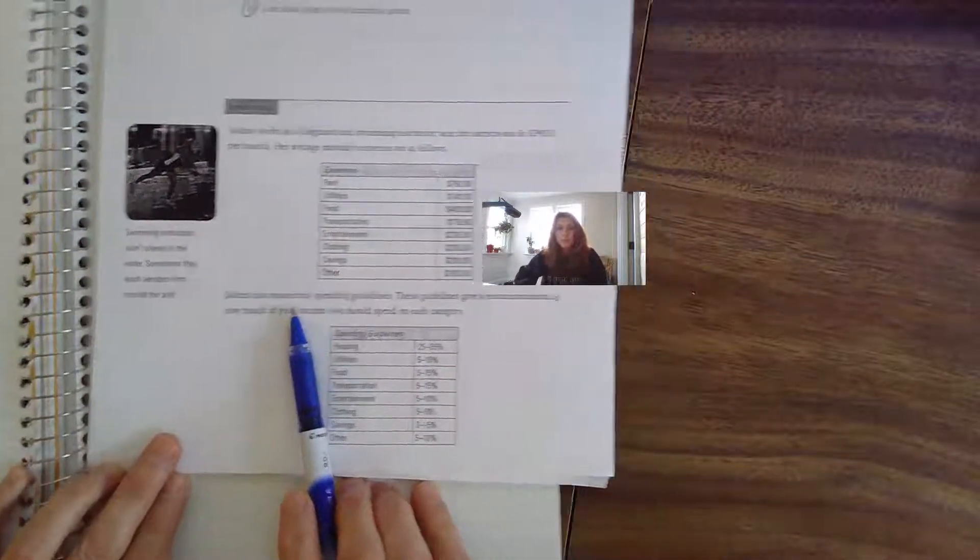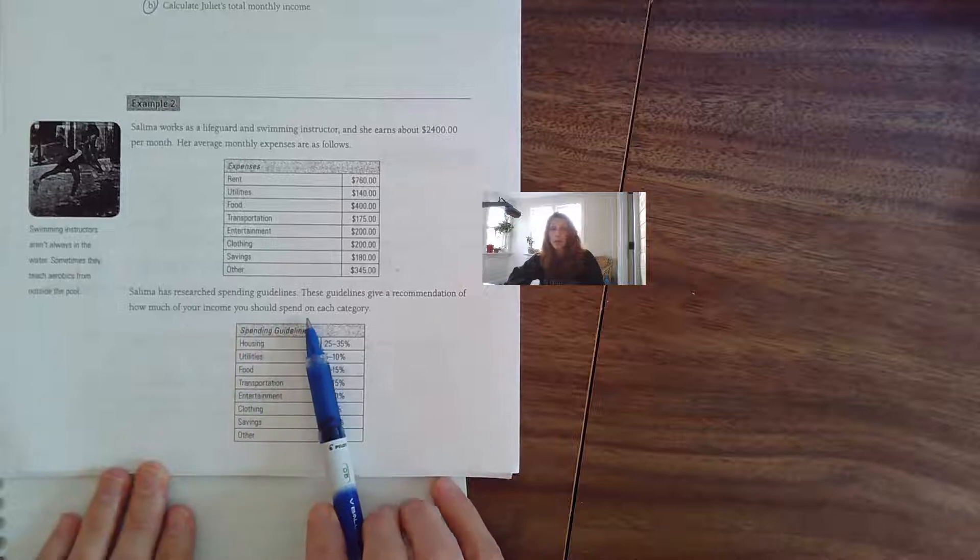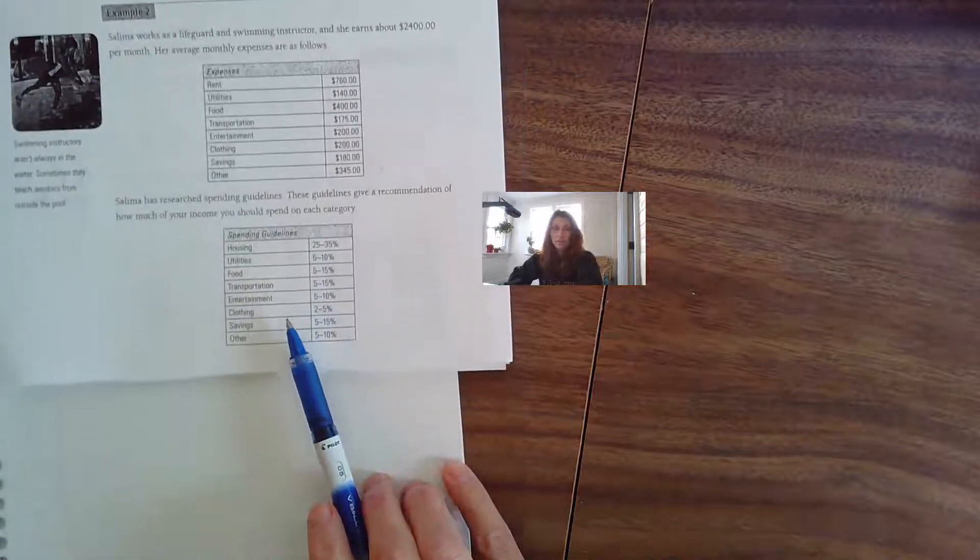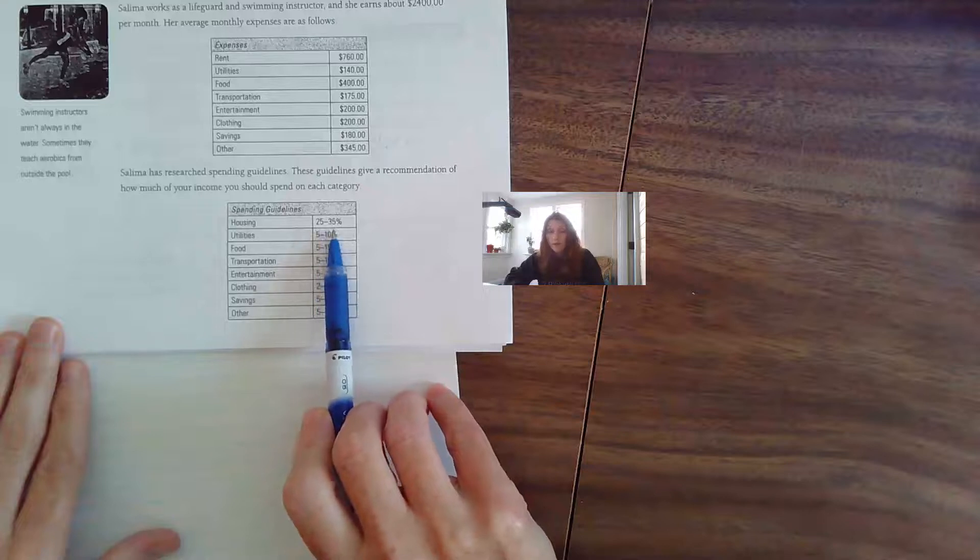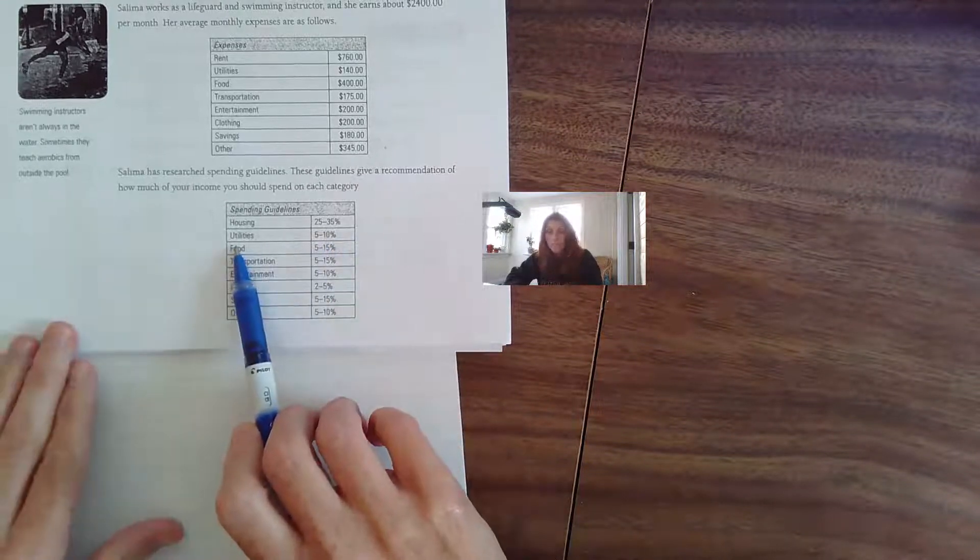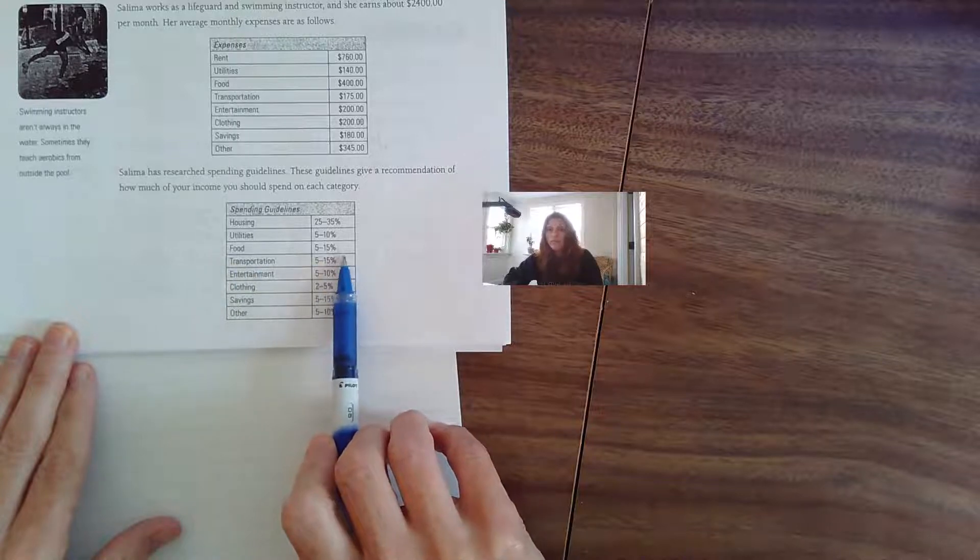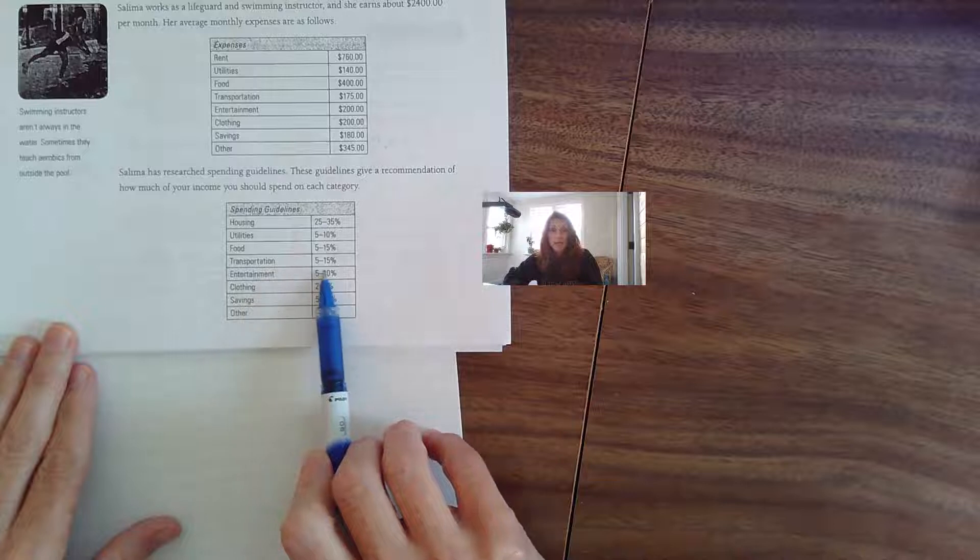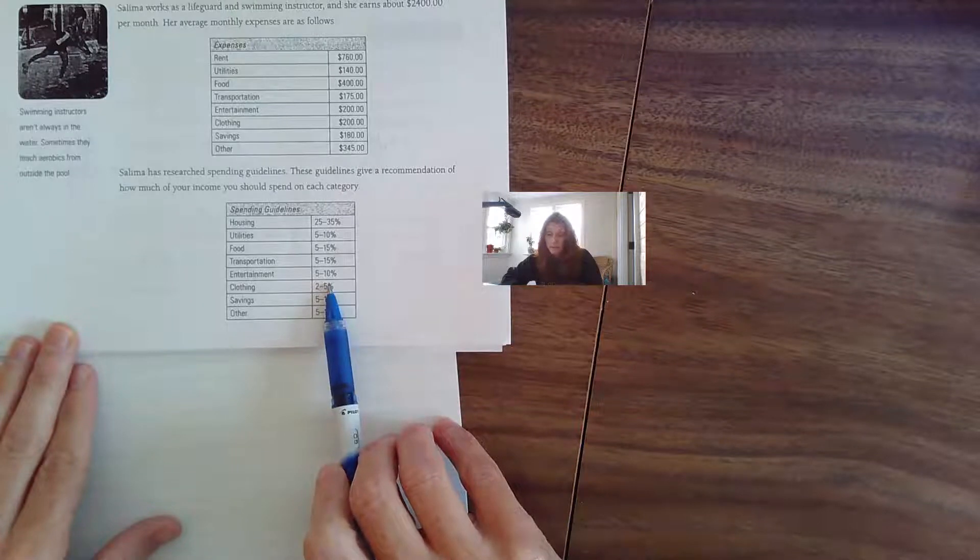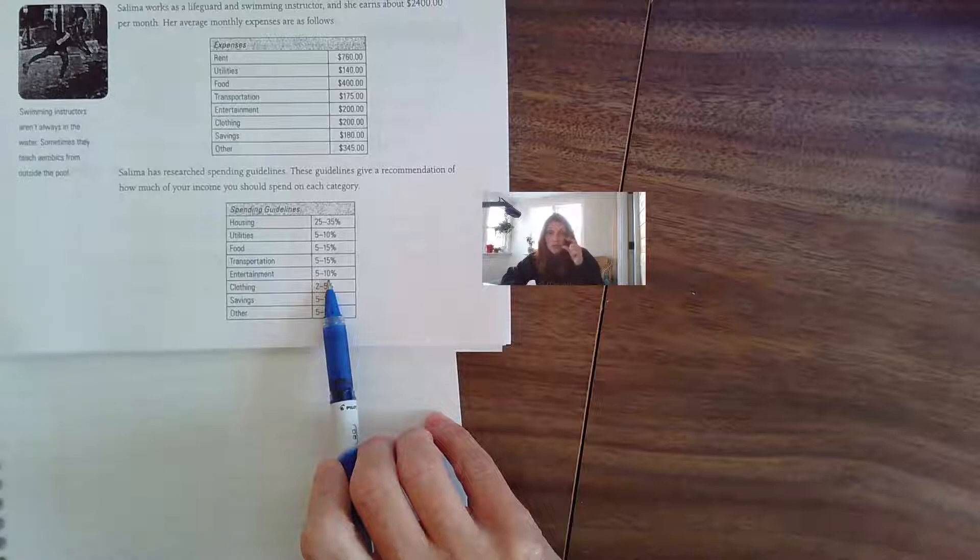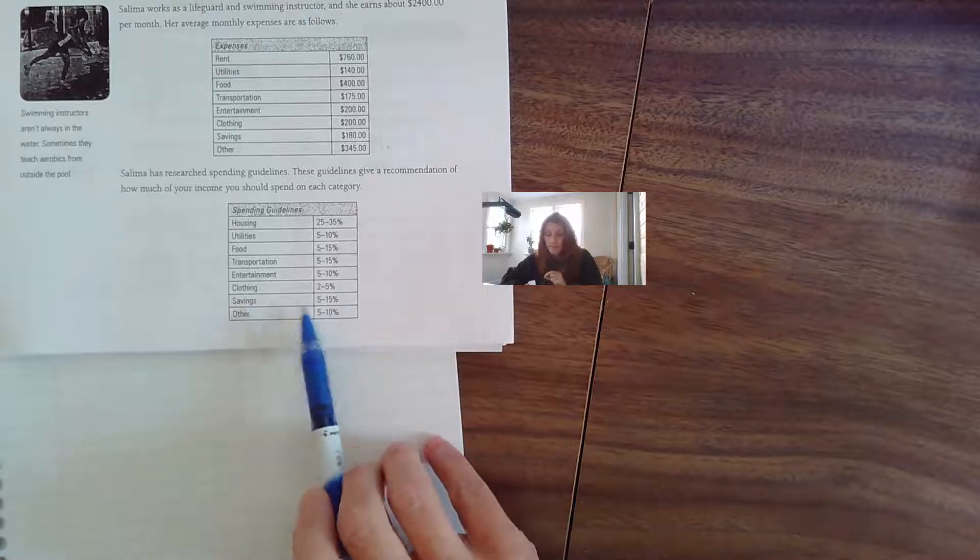Salima has researched spending guidelines. These guidelines give a recommendation of how much of your income you should spend on each category. For spending guidelines, they recommend housing costs should be between 25 and 35% of your income, utilities 5 to 10%, food 5 to 15%, transportation 5 to 15%, and entertainment 5 to 10%.